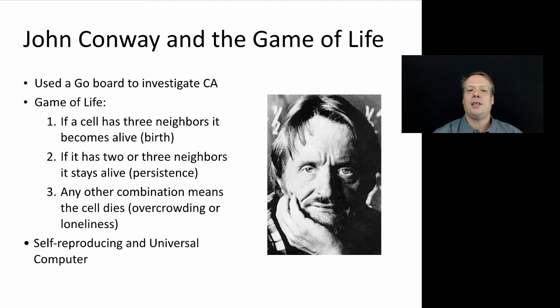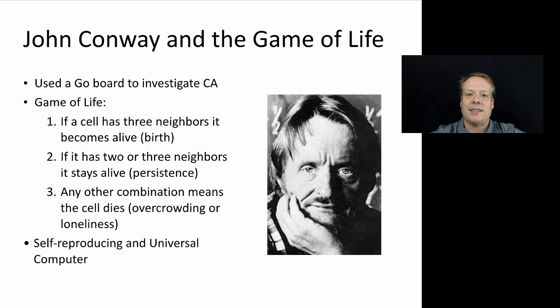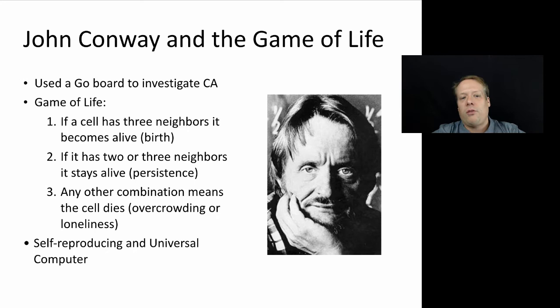That brings us to our next character, John Conway. Conway was using a Go board to investigate cellular automata when he struck upon an interesting set of rules he later called the Game of Life. The idea was: if a particular square has three neighbors, it becomes alive — it goes from dead to alive, which he called the birth process. If it has two or three neighbors, it stays alive. Any other combination means the cell dies, either due to overcrowding or loneliness. And this is why he called it the Game of Life — because he had these natural rules.